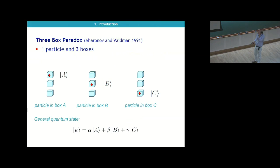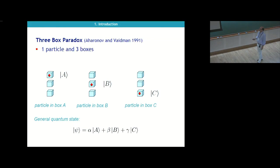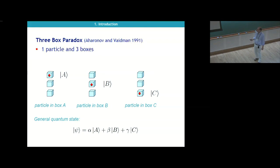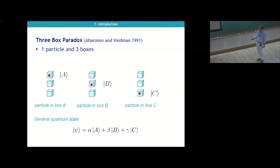Another paradox is the three-box paradox, suggested by Aharonov and Vaidman. We have three boxes: A, B, and C. When the particle is in box A, I use a state vector |A⟩ to describe it; when in box B, |B⟩; and so on. A general quantum state is a superposition of |A⟩, |B⟩, and |C⟩. If you want to know where a particle is, you open the boxes — represented by projectors in Hilbert space. Projectors have two eigenvalues: one means the particle is found in the box, zero means it was not.